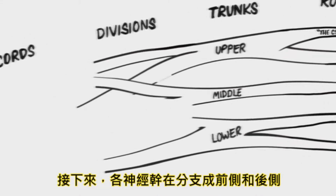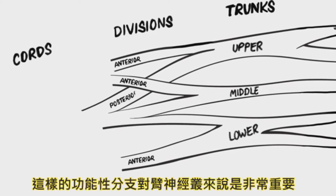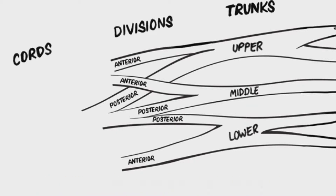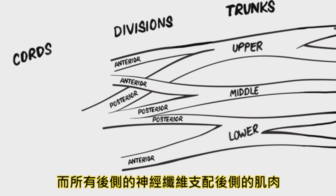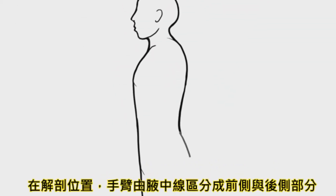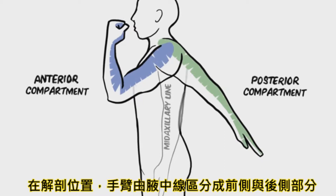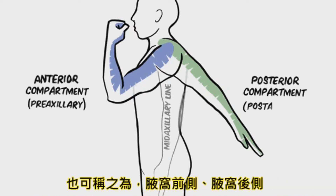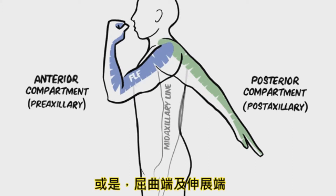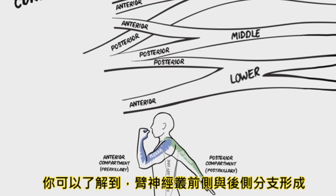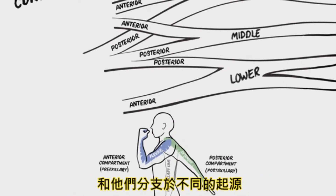Next, each trunk divides into an anterior division and a posterior division. This is the most important functional segregation that takes place in the brachial plexus, because all of the fibers in the anterior division will innervate anterior compartment muscles, while all of the fibers in the posterior division will innervate posterior compartment muscles. In the anatomical position, the arm can be divided by a midaxillary line into an anterior compartment and a posterior compartment, also called preaxillary and postaxillary compartments, or flexor and extensor compartments.